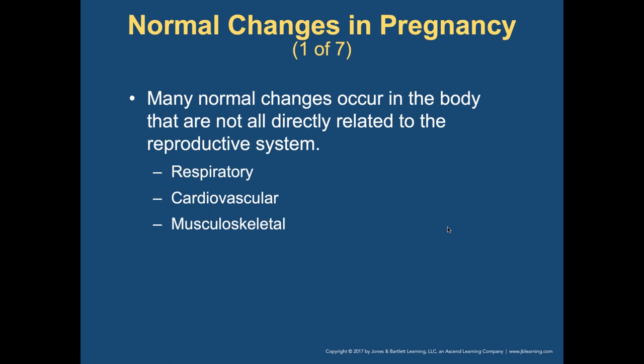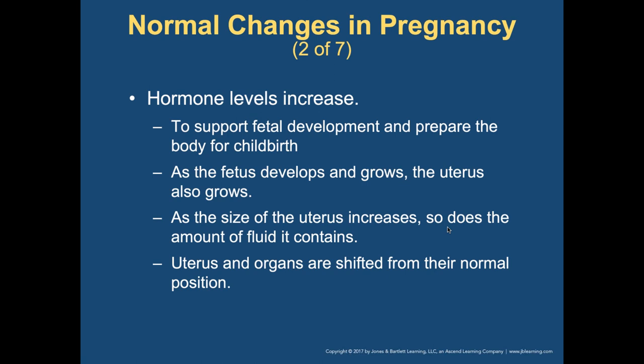Normal changes in pregnancy: the female will start breathing heavier and have more difficulty breathing. Cardiovascular: cardiac rate increases. Musculoskeletal: things start hurting, and as the baby drops into the birth canal the center of gravity rotates and changes. Hormone levels increase to support fetal development and prepare the body for birth. This puts pregnant women at increased risk for complications from trauma, bleeding, and some medical conditions.